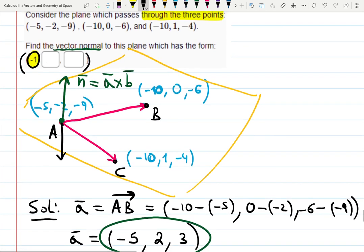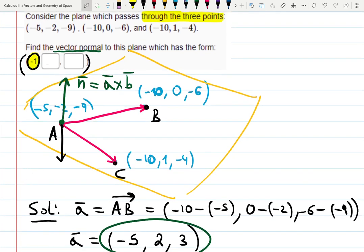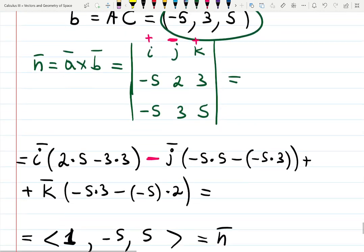So we have 1. So let's see. We have 1, minus 5, and 10. So we're going to have to multiply by minus 1, which will give us the other direction. So it will be minus 1, 5, and minus 10.